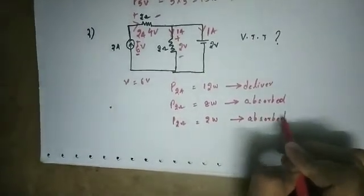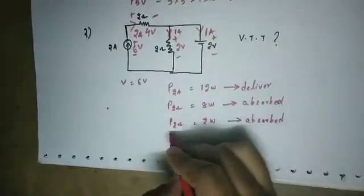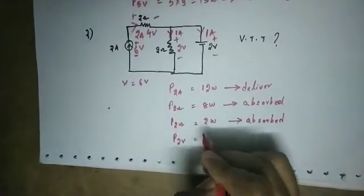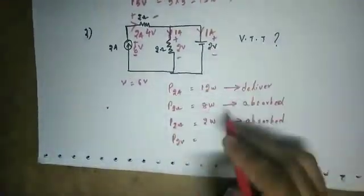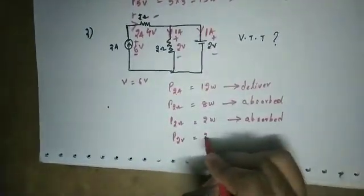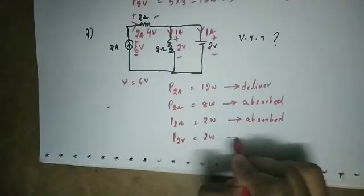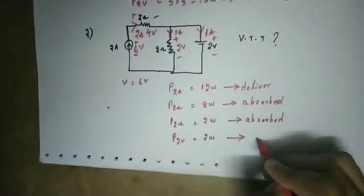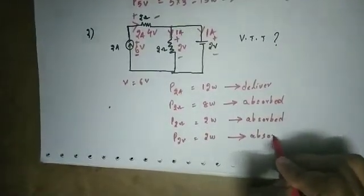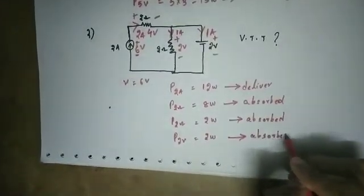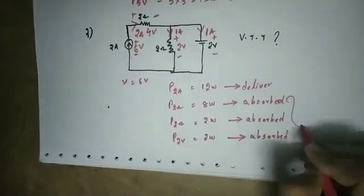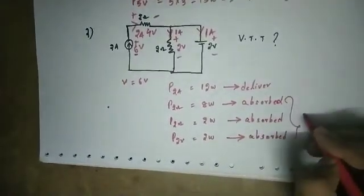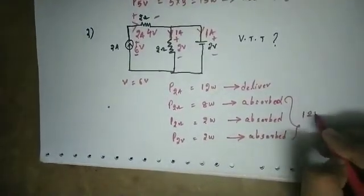Next, the 2 volt source: V into I equals 2 into 1, which is 2 watts. This is absorbed. Total absorbed power is 8 plus 2 plus 2, which is 12 watts.